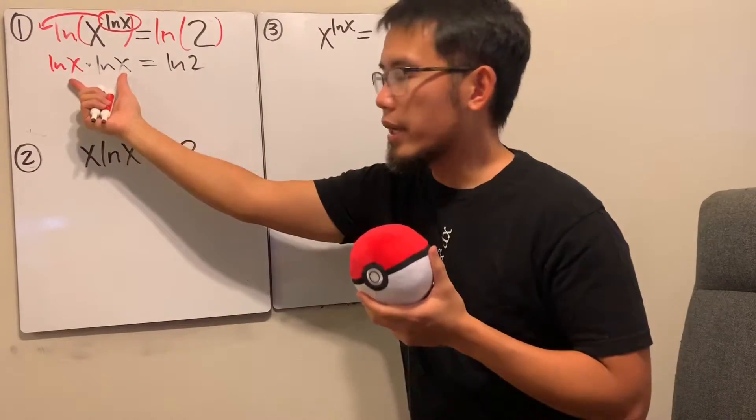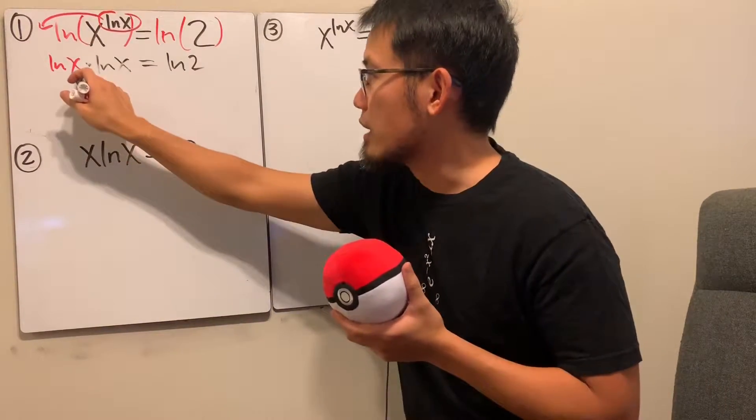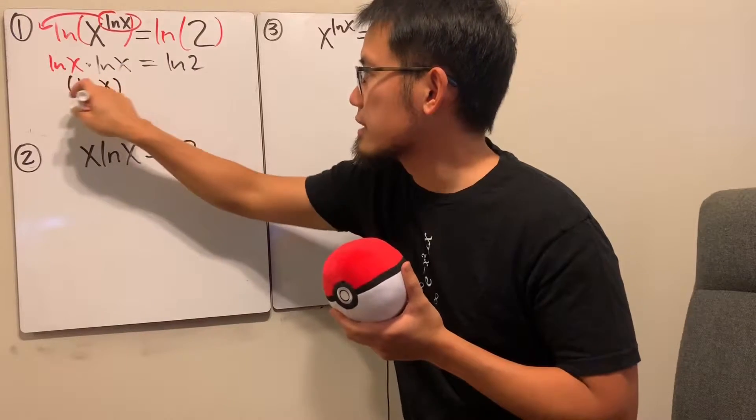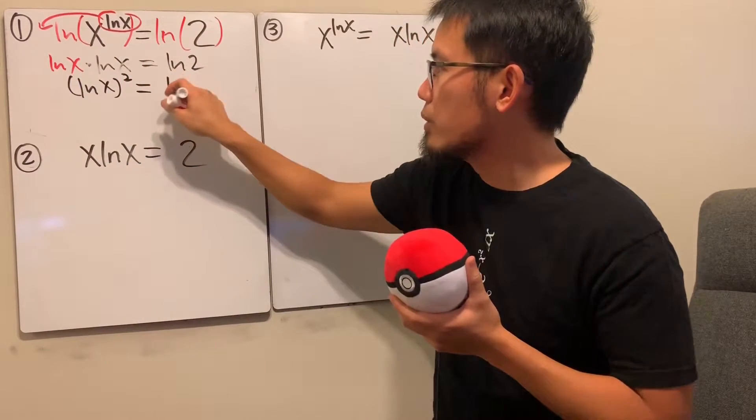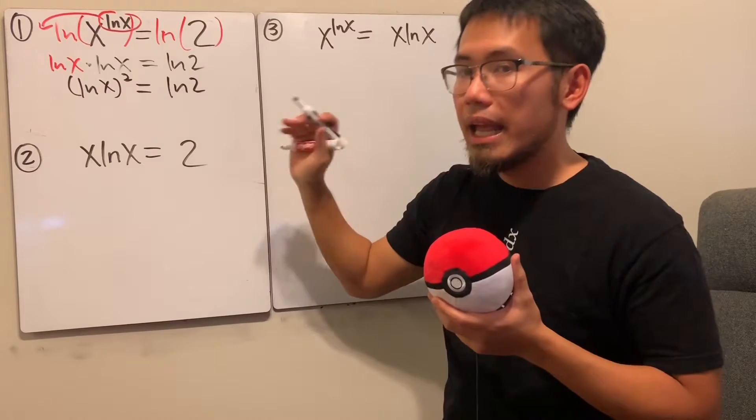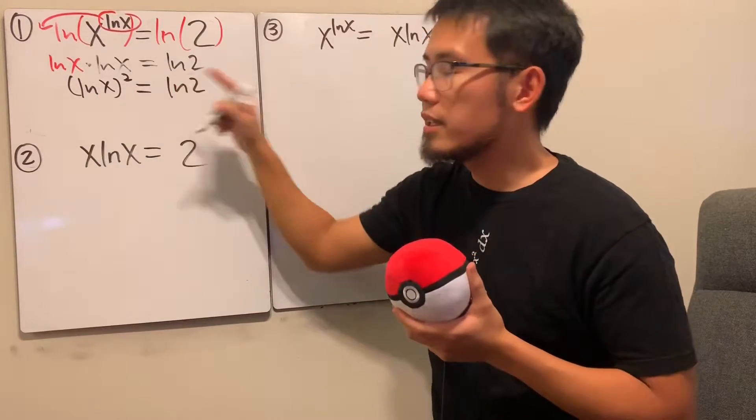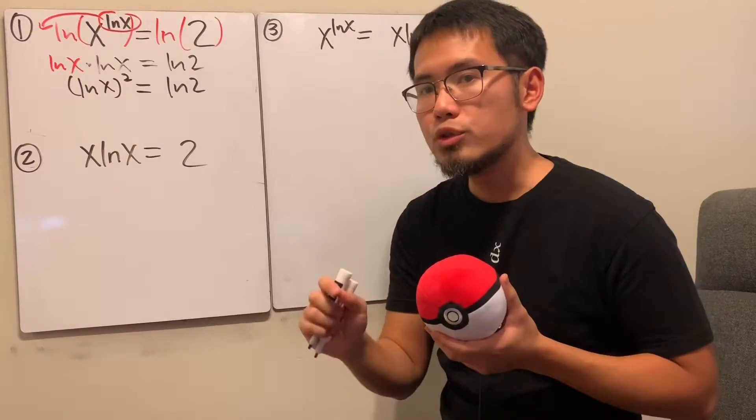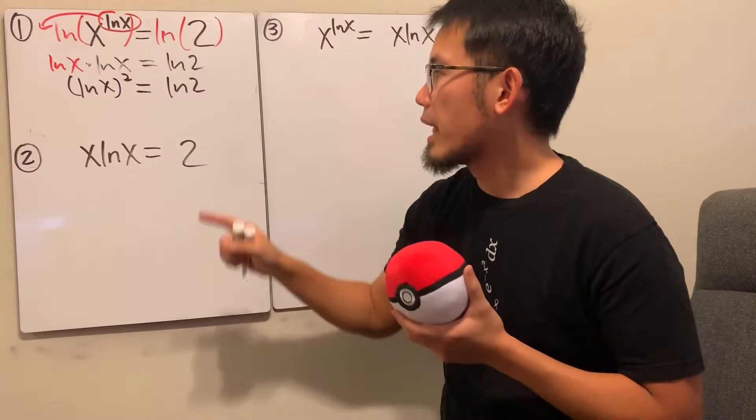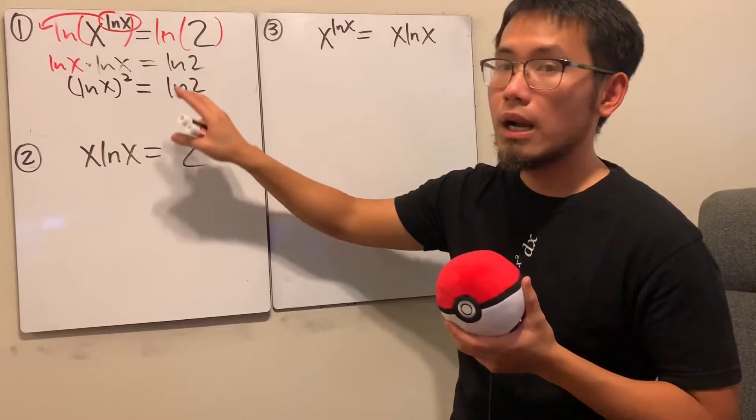And you see, this right here we can just multiply, and that becomes natural log of x squared that's equal to natural log of 2. And then right here, we can just take the square root on both sides, but be sure you have the plus or minus.